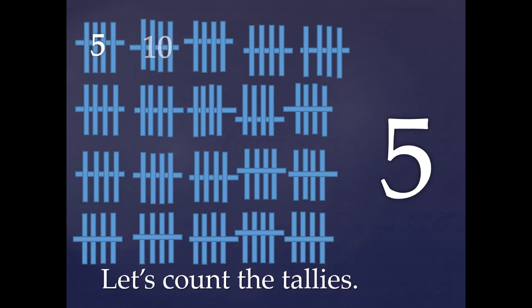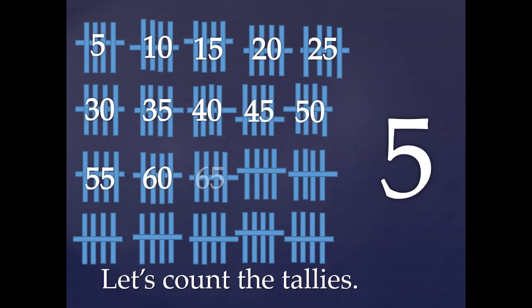Five, ten, fifteen, twenty, twenty-five, thirty, thirty-five, forty, forty-five, fifty, fifty-five, sixty, sixty-five, seventy, seventy-five, eighty, eighty-five, ninety, ninety-five, one hundred. There are one hundred tallies on this page, just like there are one hundred cents in a dollar. And when we counted these tallies, we counted by five, just like when we count nickels, we count by five.